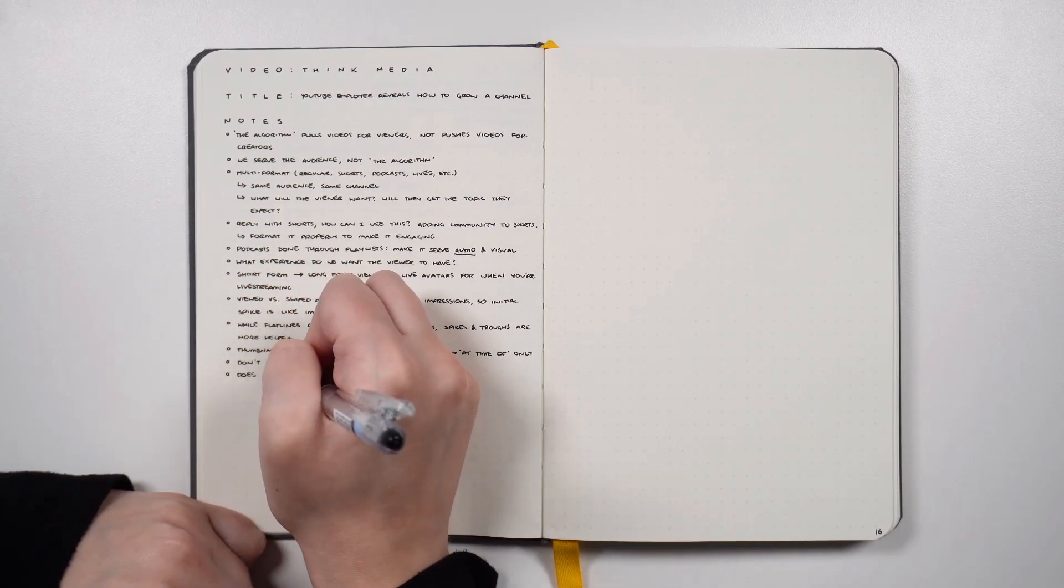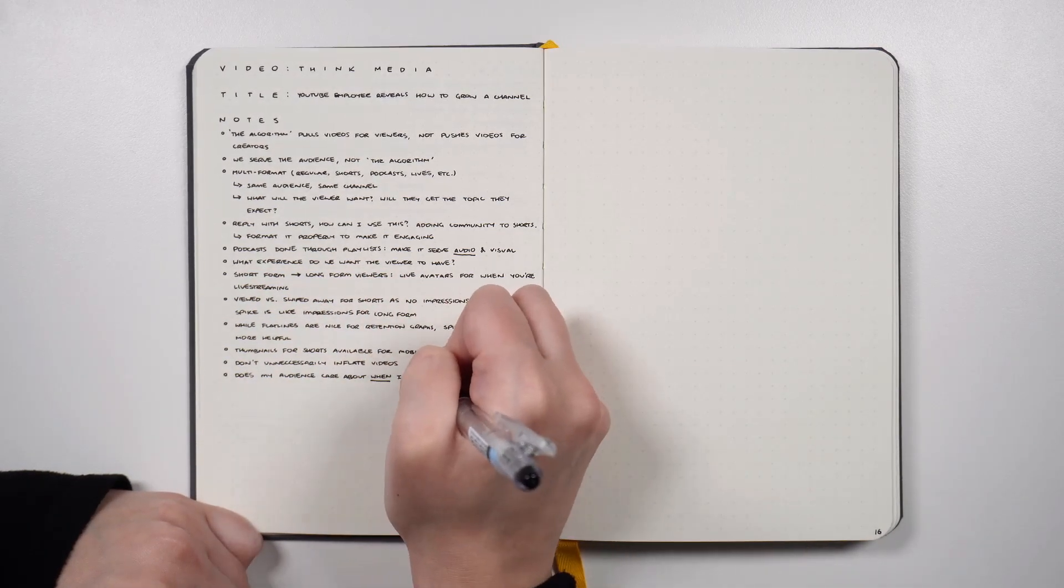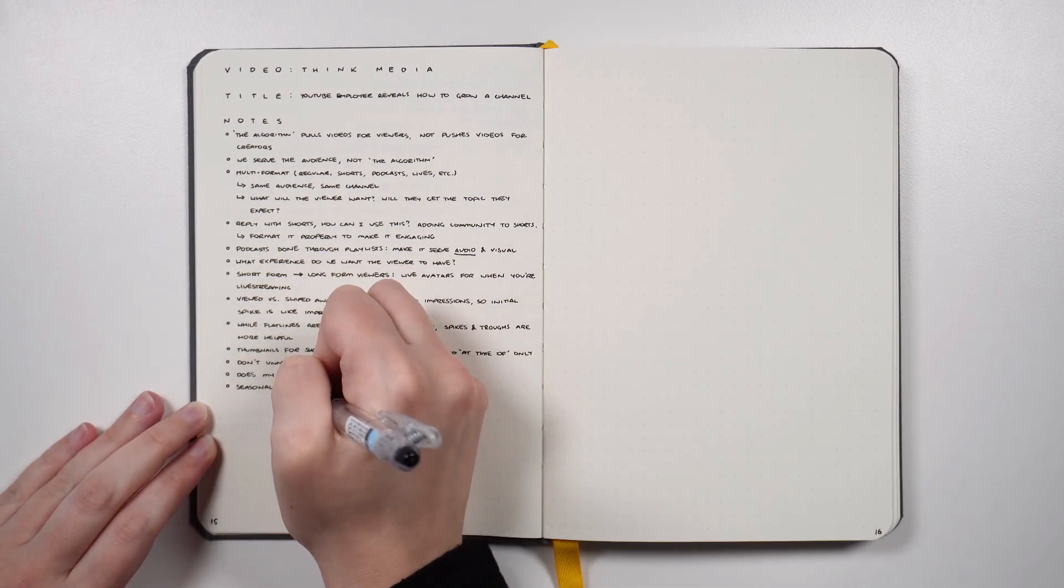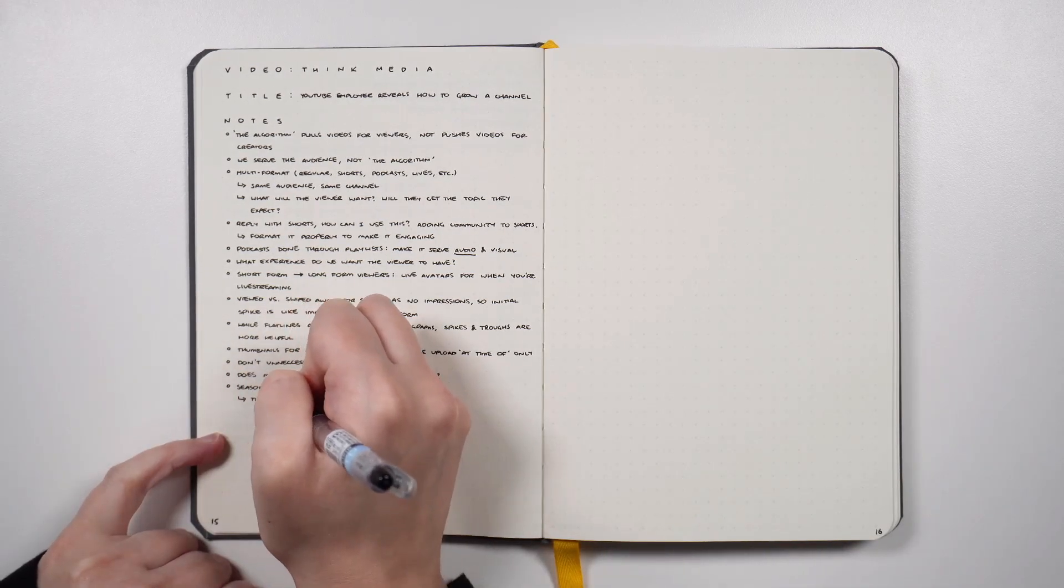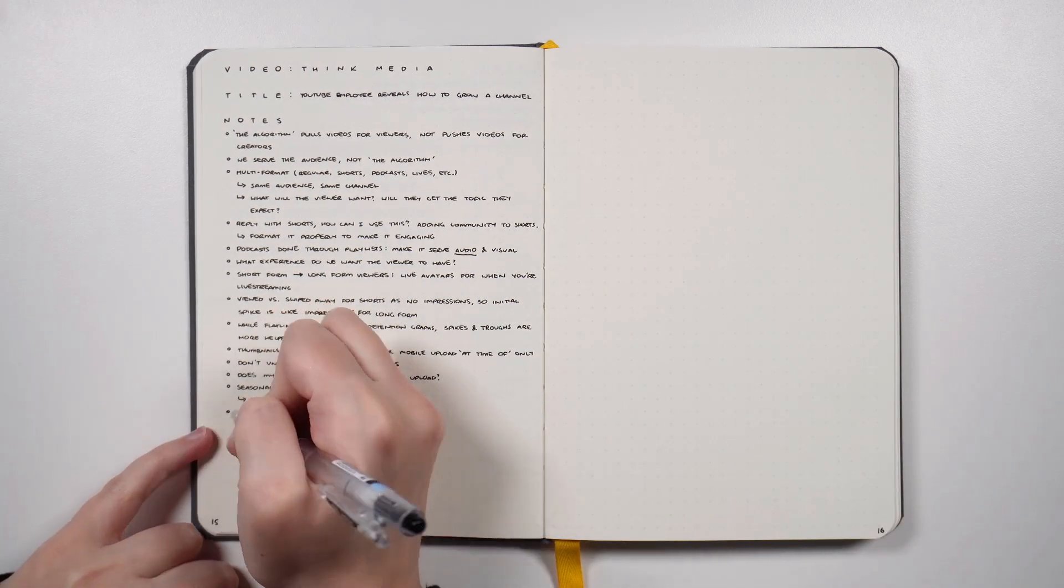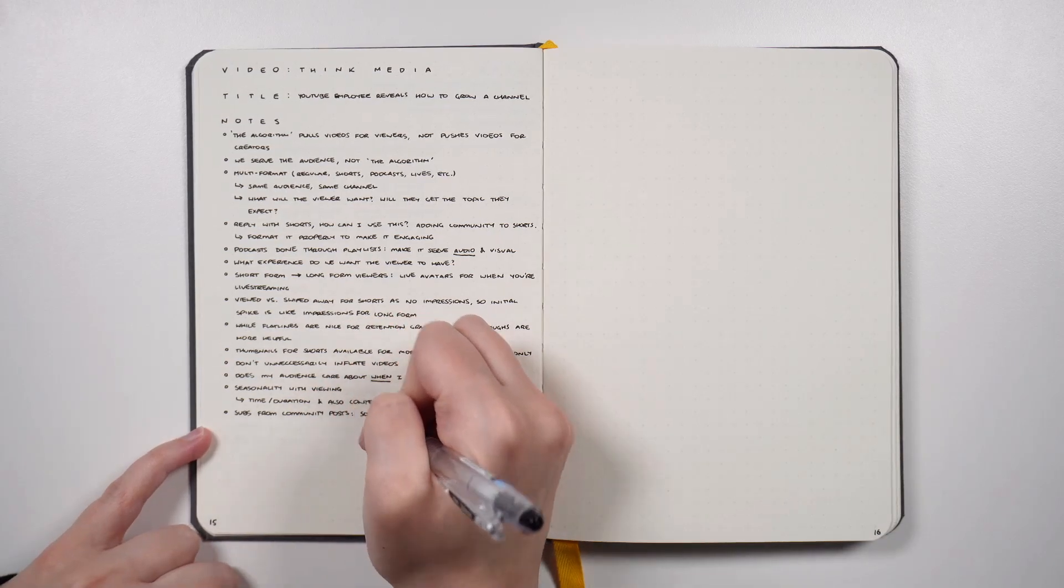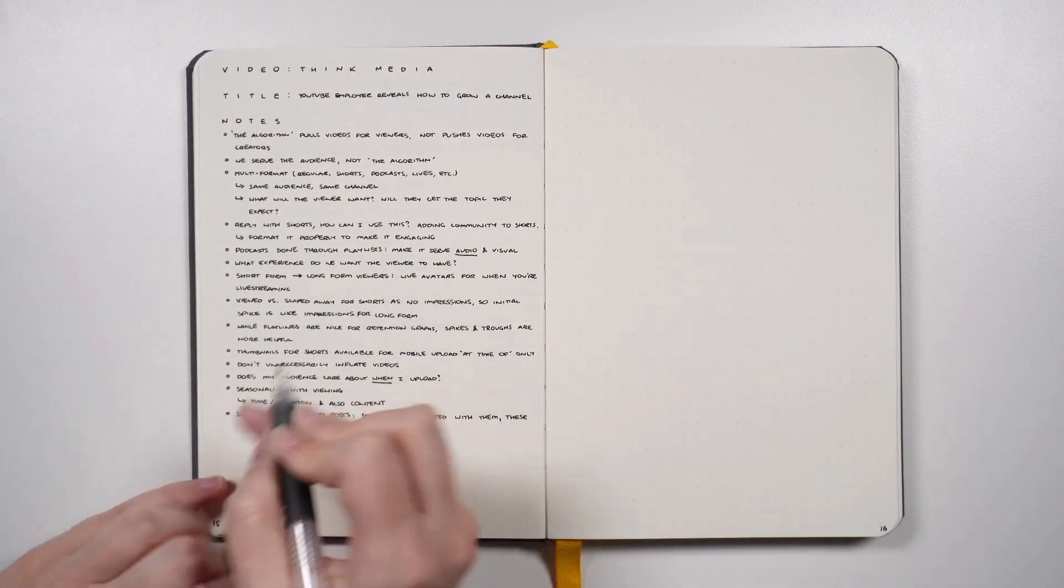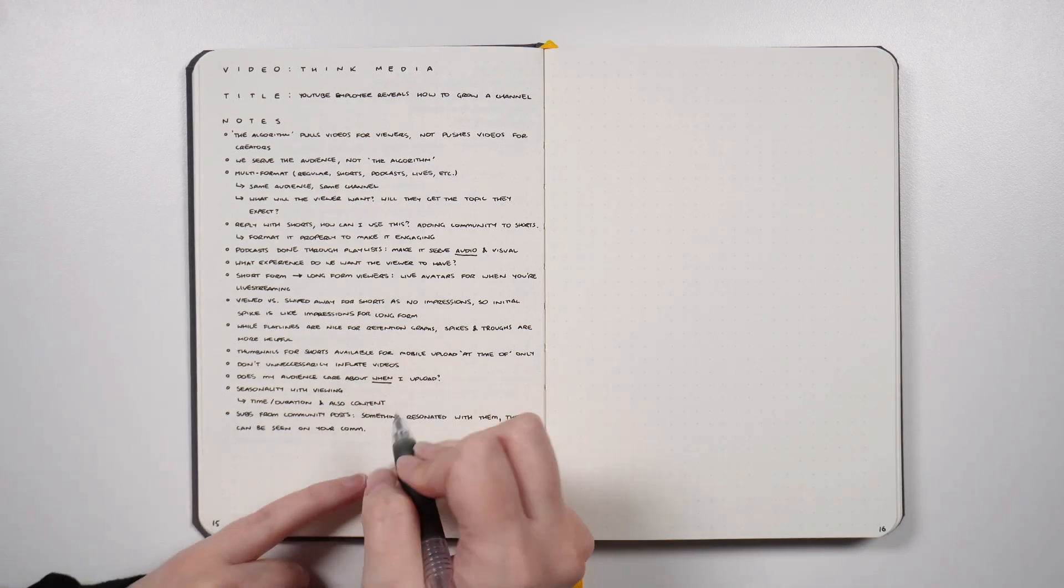As you can see, underneath the title I will just write down my notes. Depending on the format of the piece of media, sometimes I might put in some key points before the notes section or some kind of general takeaways, but I like to write the notes down just in a bullet point form so that they're easily digestible if I wanted to come back and re-look over those notes.